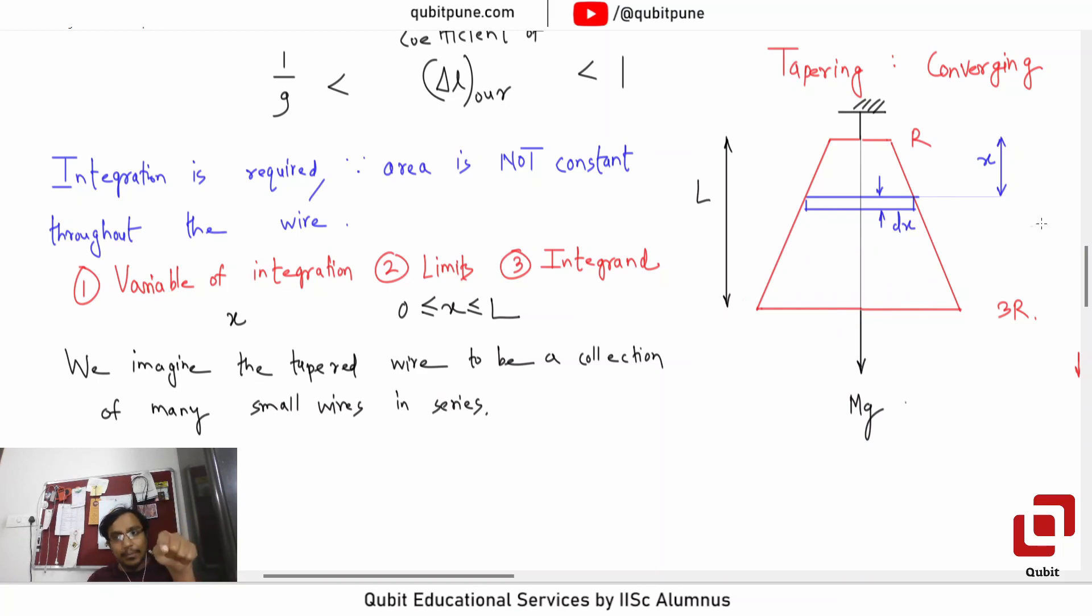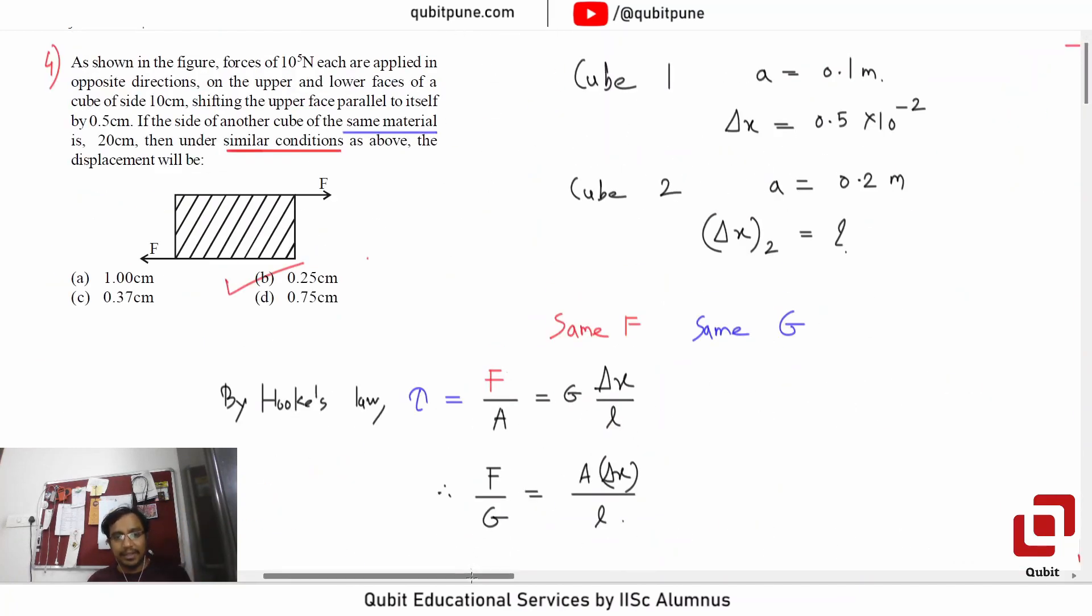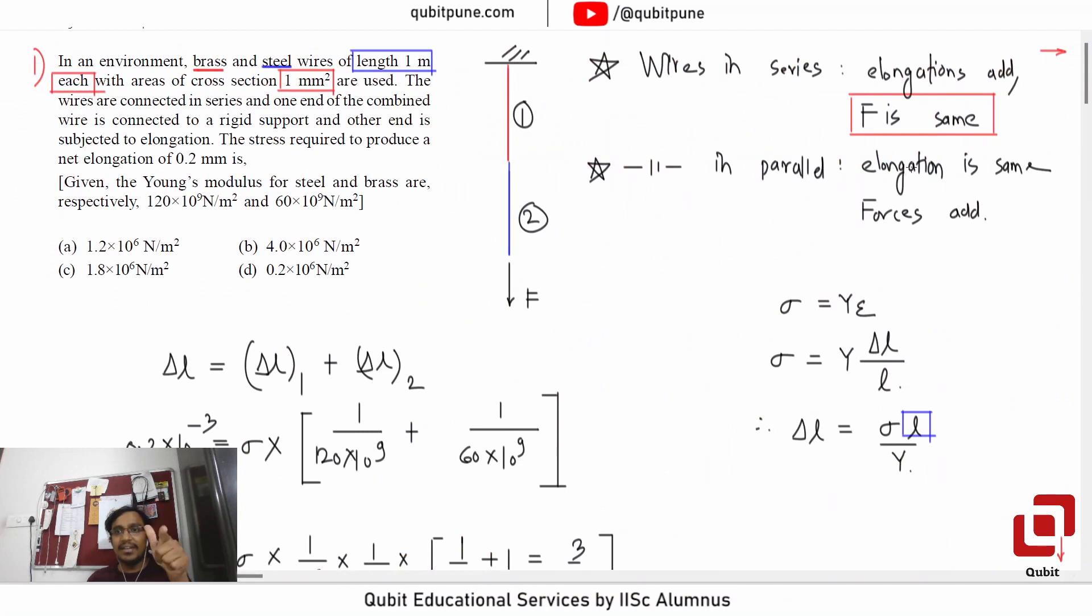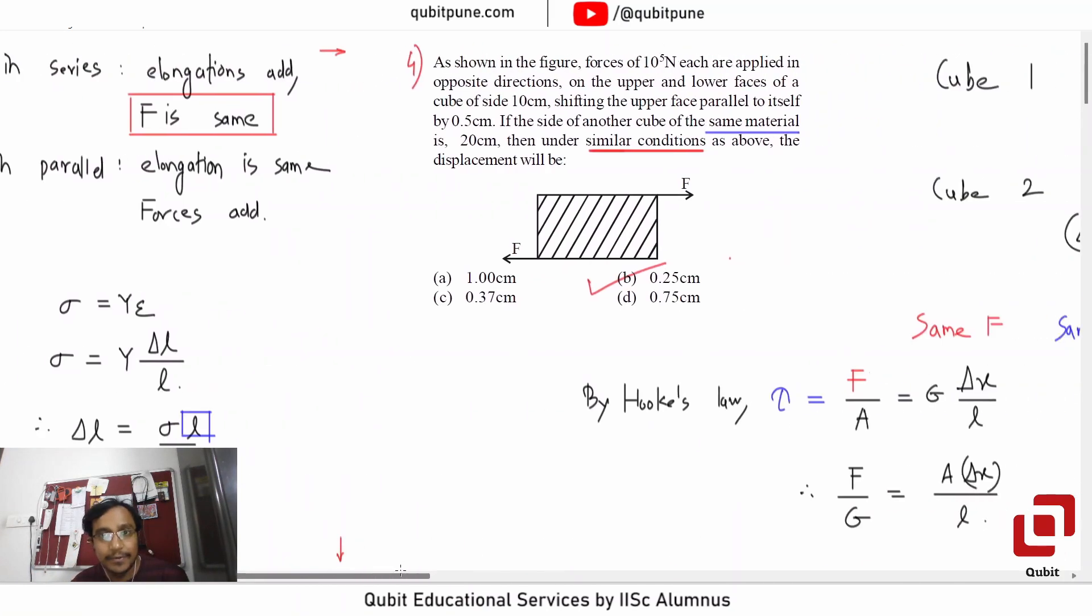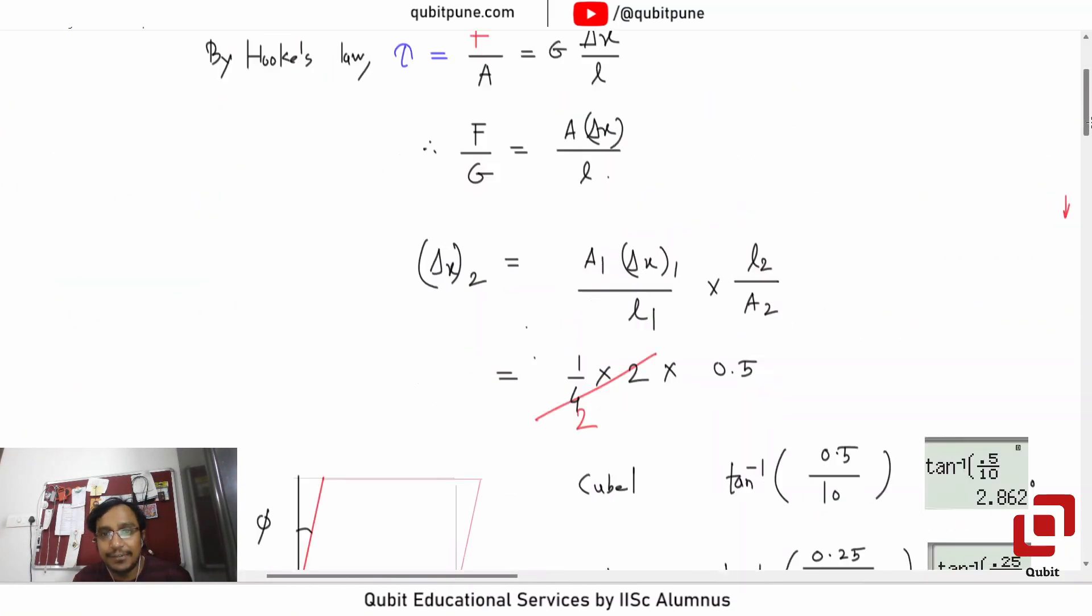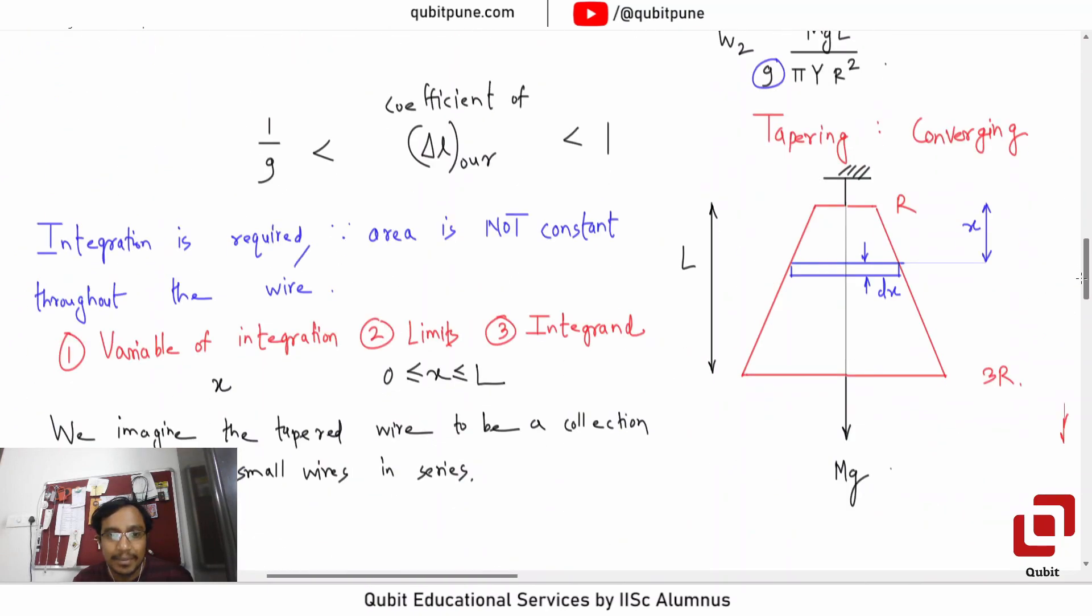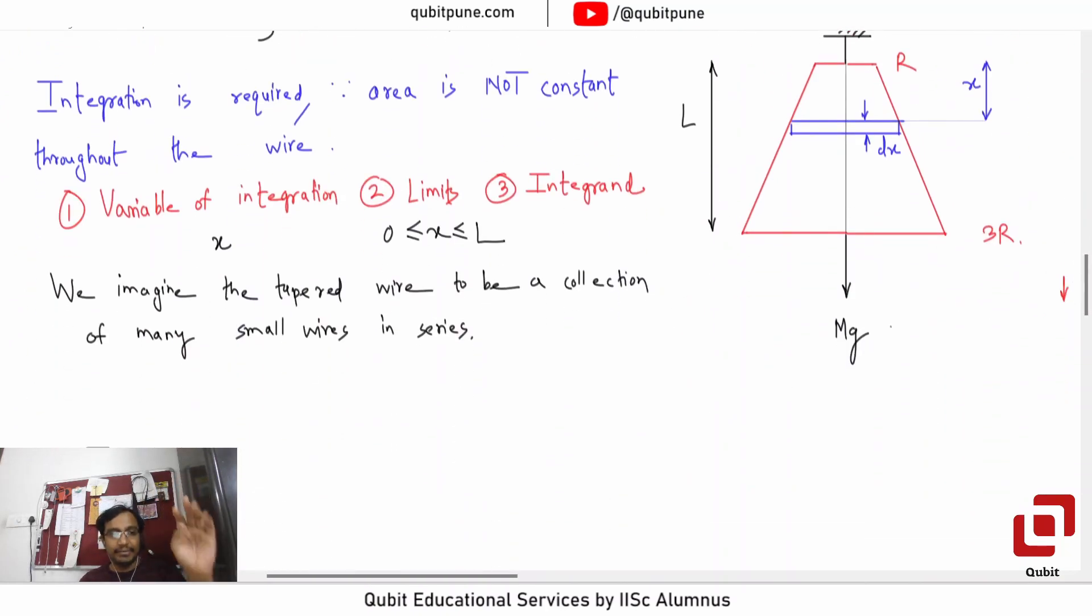Now, why is this important? Because we have seen in our very first MCQ that in series forces are the same and elongations are added. Elongations get added, and we have to find the net elongation. That's why integration's required - to find the net elongation. Because in series same force will act on all the wires, the elongations will be different.